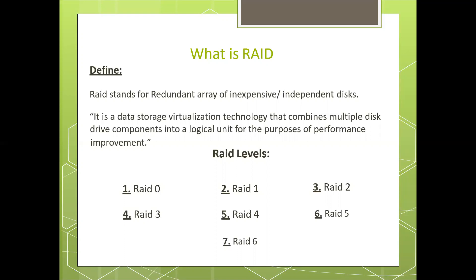The key evaluation points for a RAID system are reliability, availability, performance, and capacity. Reliability means how many disc faults can the system tolerate. Availability means what fraction of the total session time is the system in uptime mode — how available is the system for actual use. Performance is the response time and throughput, that means rate of processing work. Capacity means how much useful capacity is available to the user.